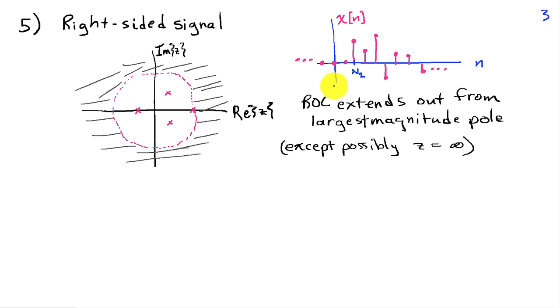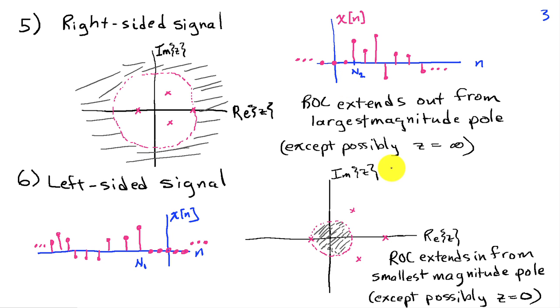On the other hand, if the signal is left-sided, as shown down here, and that means that the signal is 0 to the right of some time index capital N1, then the region of convergence extends inside a circle whose radius is given by the magnitude of the pole closest to the unit circle, or the pole with the smallest magnitude. Depending on whether n1 is positive or negative, we may have to exclude the possibility of z equals 0.